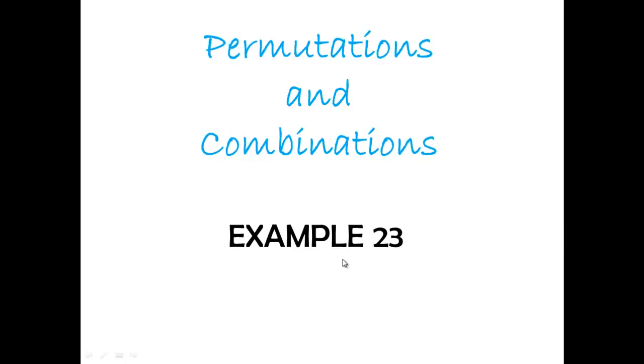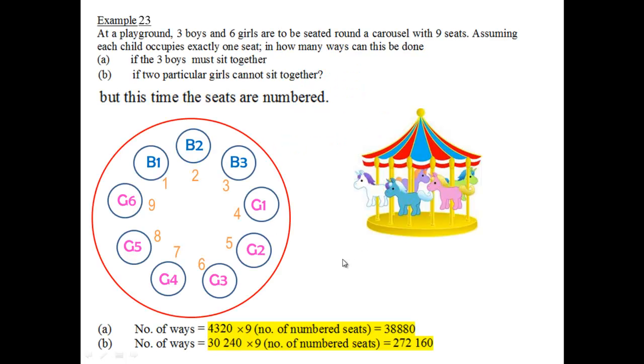Let's look at Example 23. Example 23 is exactly the same as Example 22, but this time the seats are numbered from 1 to 9. How is this question different from the earlier one? It's different